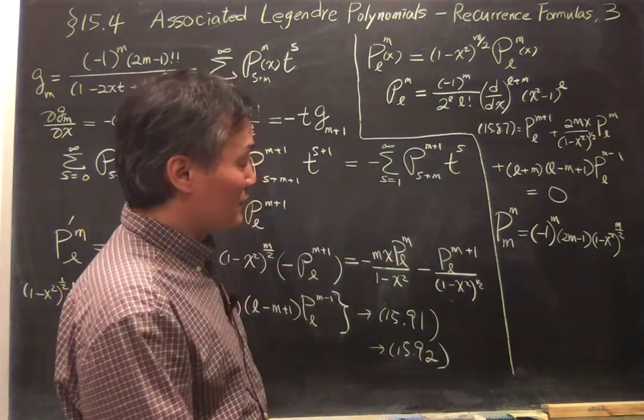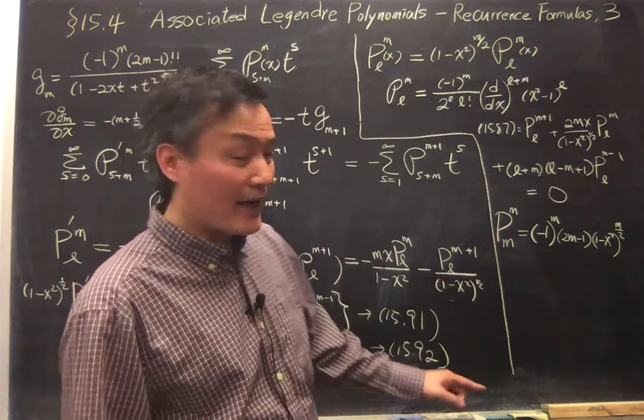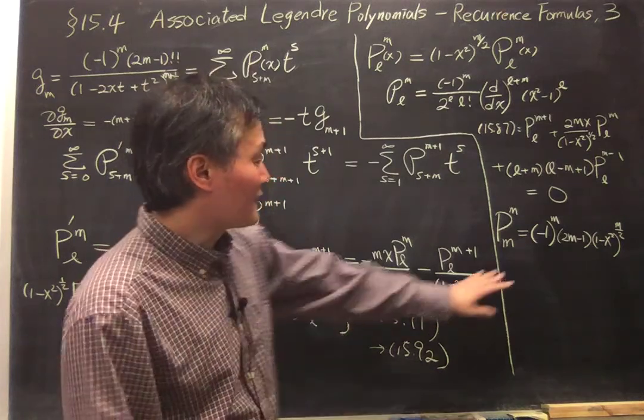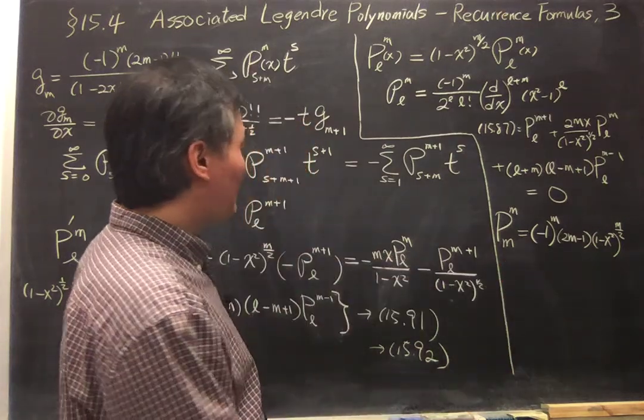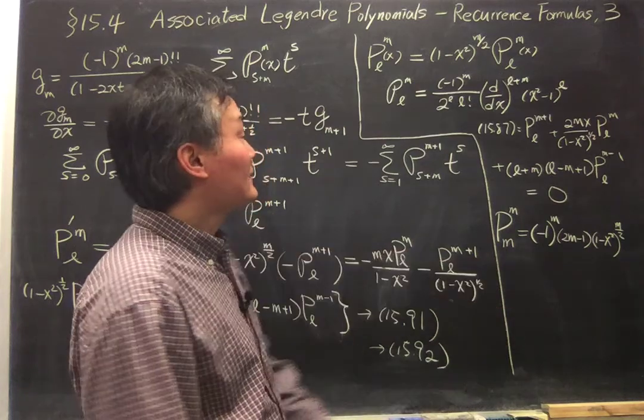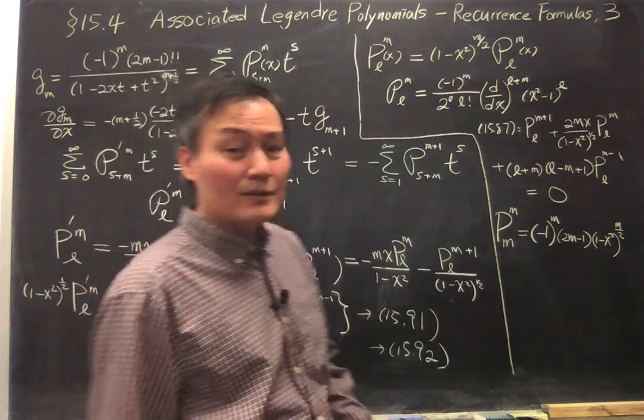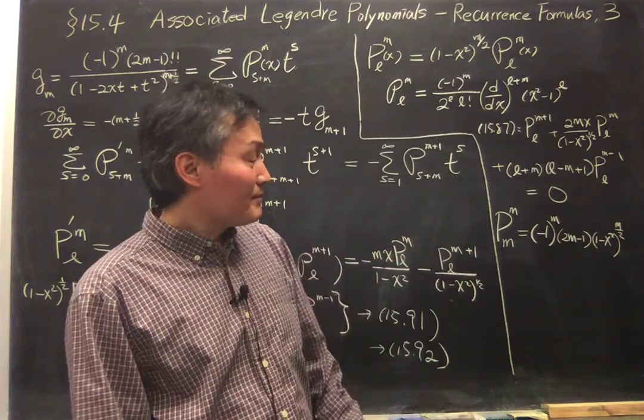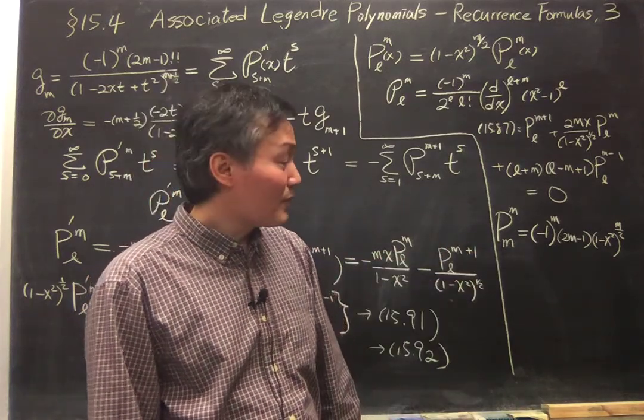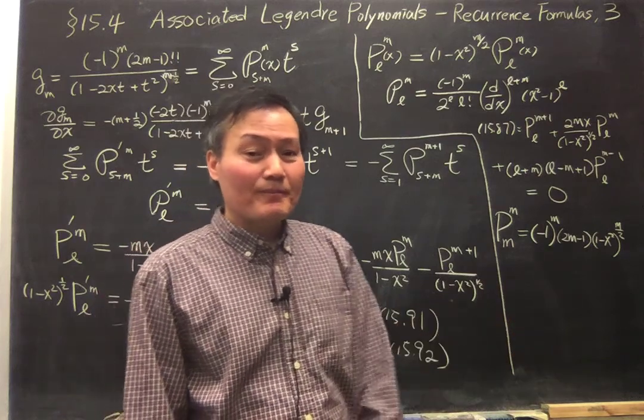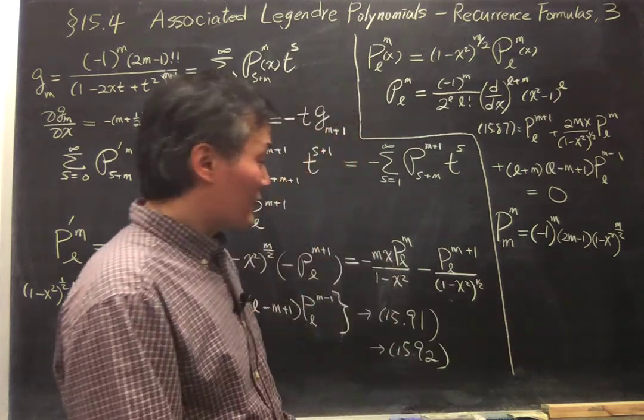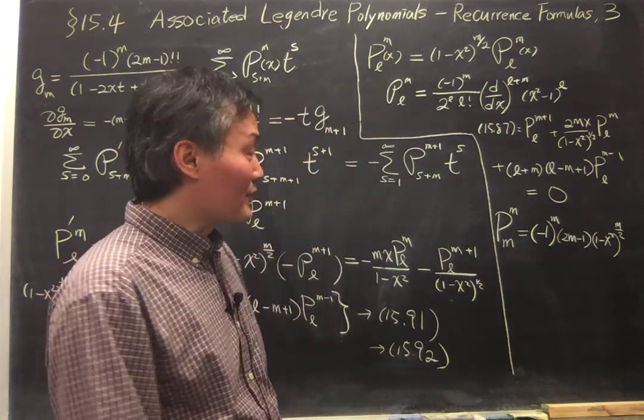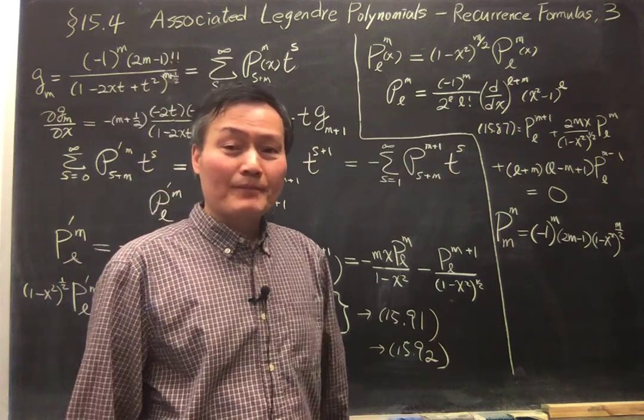So that's one thing that you can use. So once you have one term, then you can use one of these recurrence formulas to get every other Legendre, you can use the associated Legendre function, and that's the easy way to construct this function. Alright.